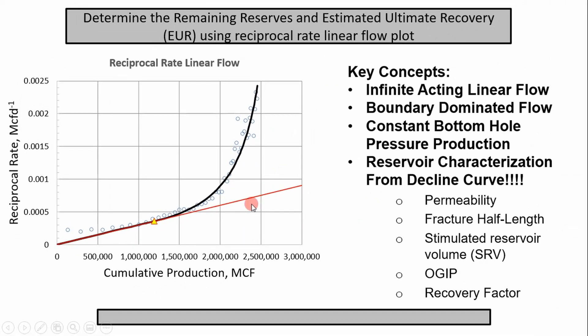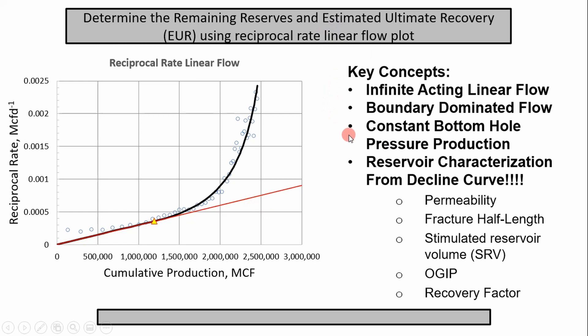And so the key concepts of this approach is that we are assuming infinite acting linear flow, and we'll get into more detail on that. We also are assuming constant bottom hole pressure production. So this line right here, if we assume constant bottom hole pressure production, we can perform reservoir characterization and get things like permeability, fracture half length, the stimulated reservoir volume or drainage area, original gas in place, and recovery factor.